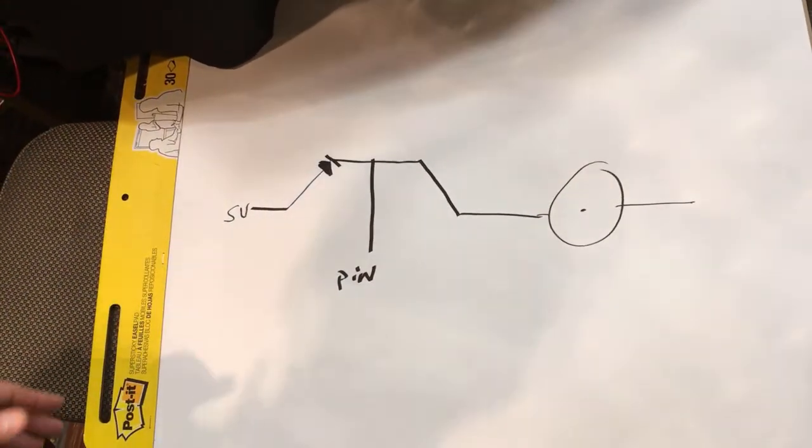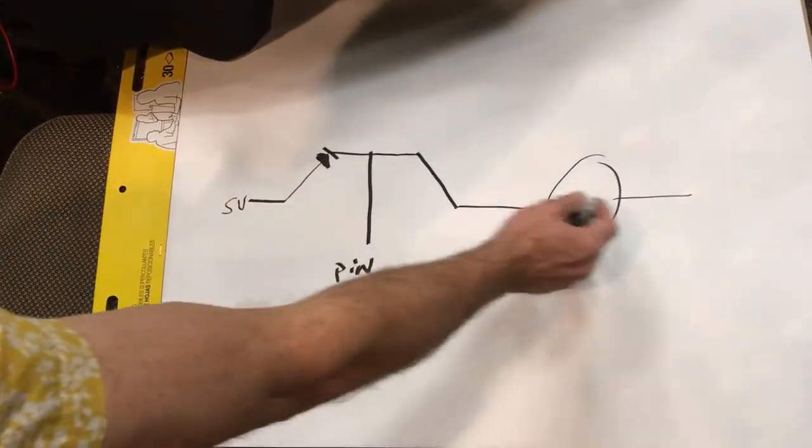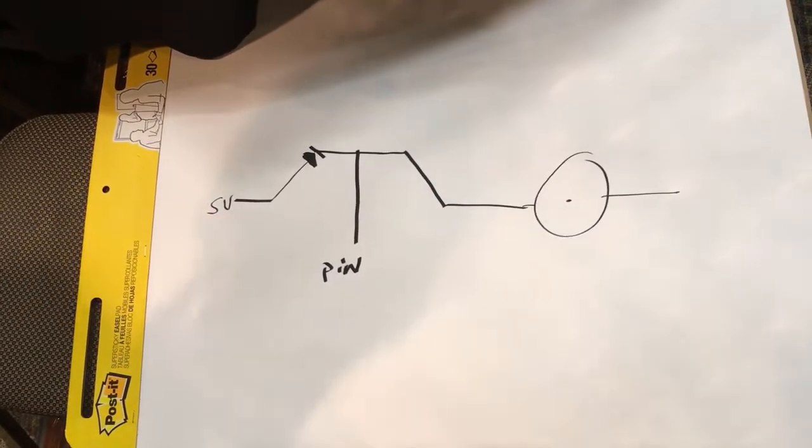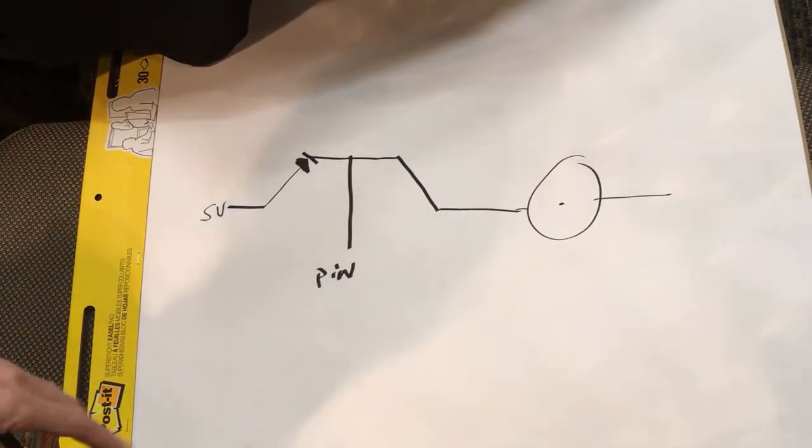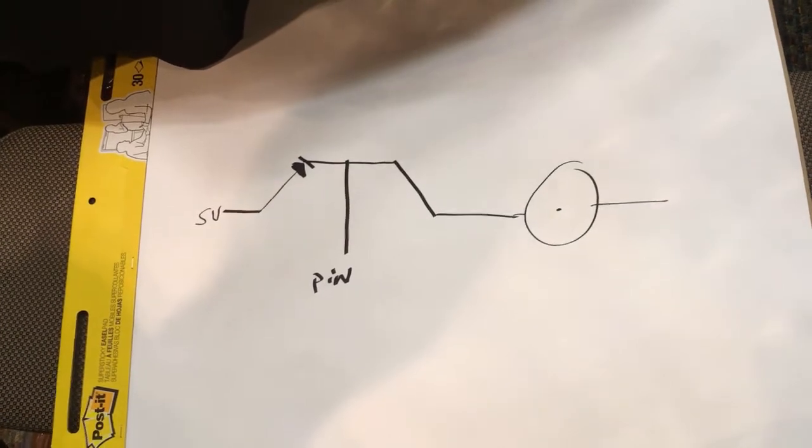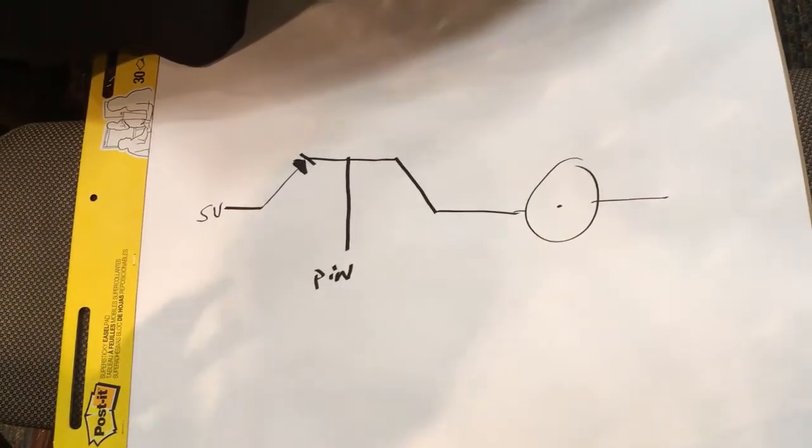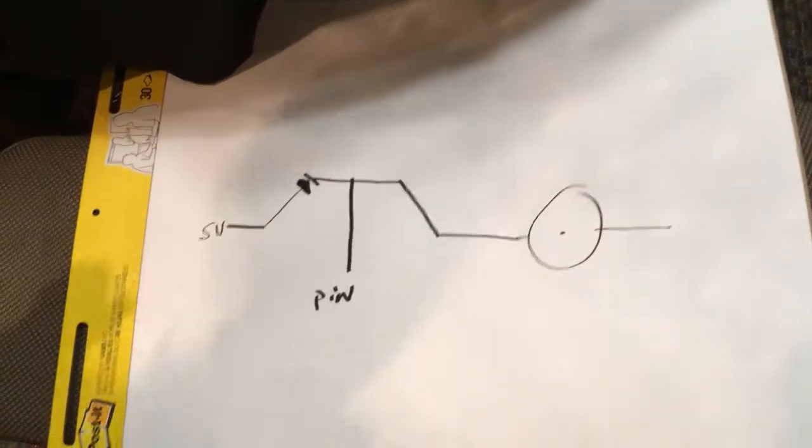The Arduino won't provide enough power from the pin to turn this on and off, so we take a high-voltage, high-current, or higher-voltage, higher-current power supply and switch this.